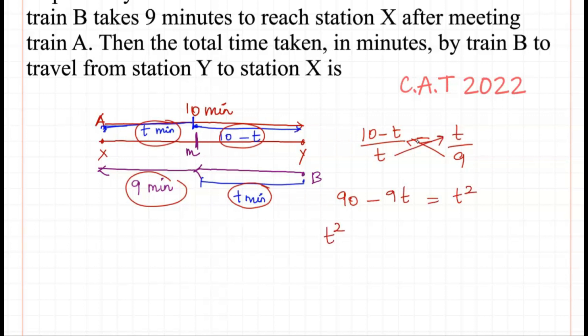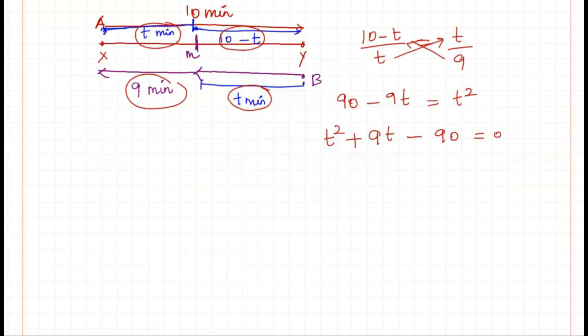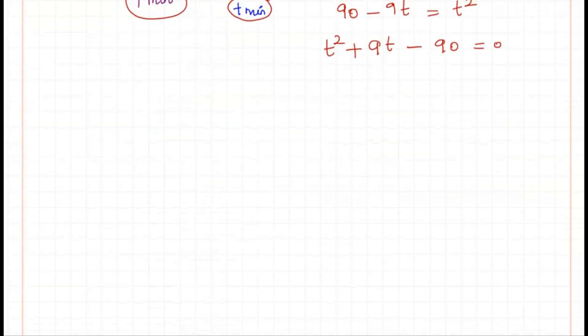Rearranging this equation: t² + 9t - 90 = 0. Now we have to find the factors for this equation.